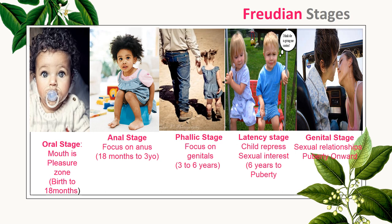The second stage was the anal stage. It focused on the anus, and that was from about 18 months to three years old. This is the time when children are learning how to use the potty — potty training. It also allows them to get a grip on holding onto their bodily functions, and that was a big part of this stage.